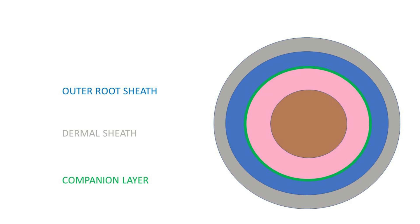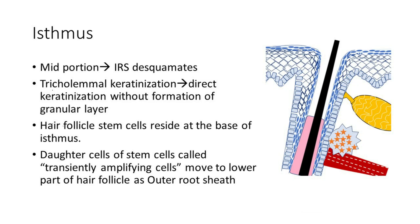Just outside the inner root sheath lies a companion layer, shown in green, which is made up of longitudinally oriented cells from the inner and outer root sheaths that move together during hair shaft elongation. The companion layer disintegrates at the level of tricholemmal keratinization. The outer root sheath, shown in blue, lies outside the companion layer — it is about two layers thick at the base of the bulb, becoming four to six layers at the isthmus. Keratinization of the outer root sheath occurs by tricholemmal keratinization. Outside the outer root sheath lies the dermal sheath, a continuation of the basal lamina of the epidermal basement membrane.